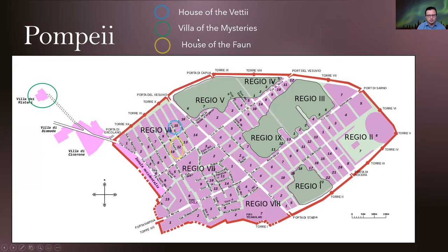It's very important to know your maps of Pompeii and Herculaneum. The blue circle marks the House of the Vettii, the yellow is the House of the Faun, and the green is the Villa of the Mysteries. The House of the Vettii covers almost half a block, while the House of the Faun is massive — it covers the entire Block 12 — indicating the social class of whoever lived there.